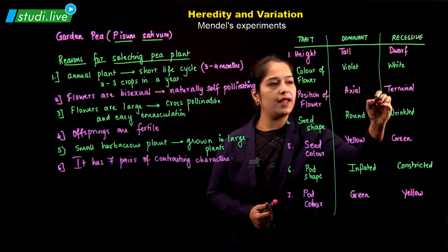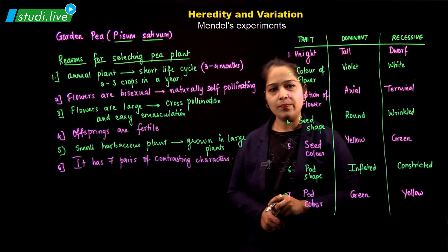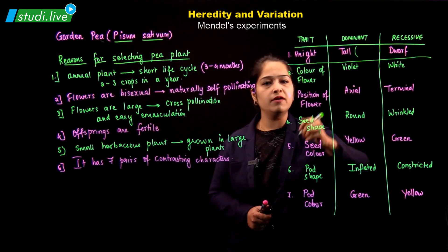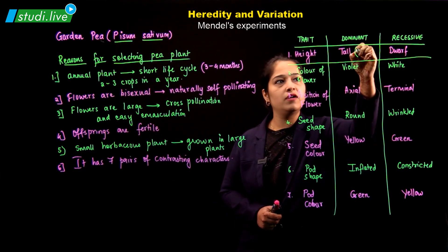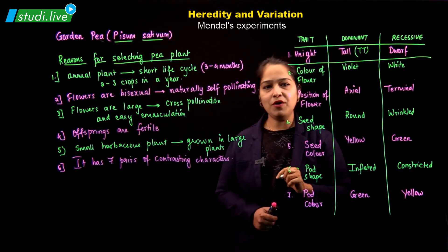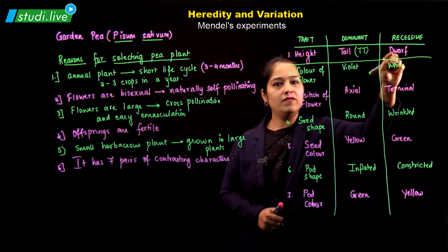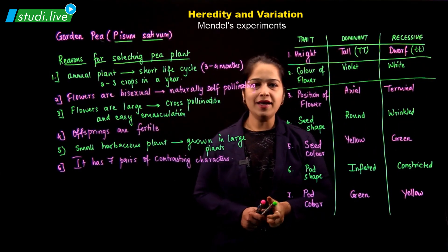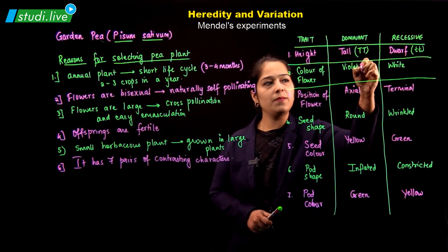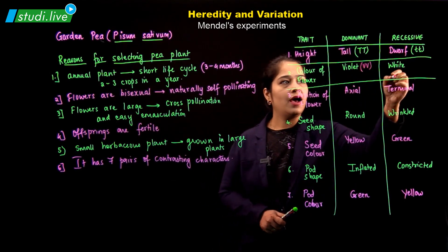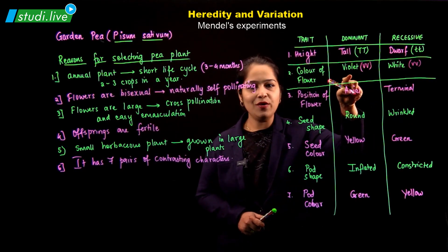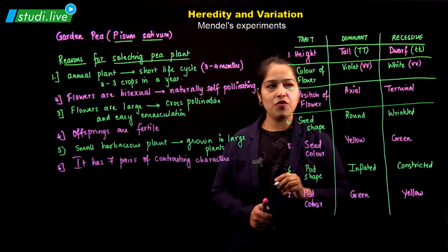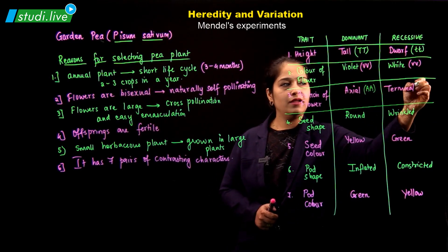Now let us look at the genotypic characters. For height, the phenotypic characters tall and dwarf are represented genotypically as TT (dominant) and tt (recessive). For flower colour, violet and white are represented as VV and vv, or RR and rr if using red/white. For position of the flower, axial is AA and terminal is aa.